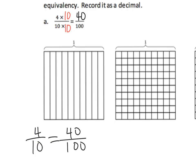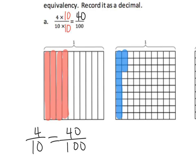We're going to shade that in to confirm. First we'll shade four tenths: one, two, three, four — there's our four tenths. Now for forty hundredths: that's ten hundredths, twenty hundredths, thirty hundredths, forty hundredths. We can see that four tenths is equivalent to forty hundredths.